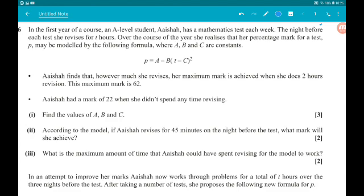This model is a quadratic. It's an unhappy quadratic because if we expanded everything out, we would get a negative t squared. So it's of that shape. It's in completed square form, so bear that in mind. Asha finds that however much she revises, her maximum mark is achieved when she does two hours revision. This maximum mark is 62. Asha had a mark of 22 when she didn't spend any time revising. Part 1 for three marks: find the values of A, B and C.